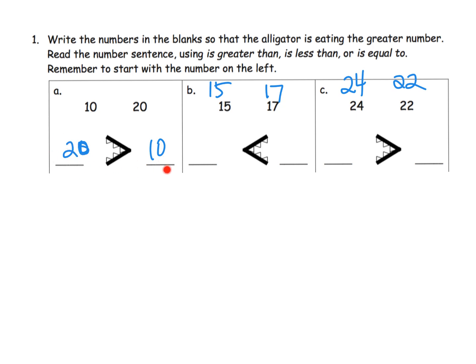Now we have the alligator facing to the left eating that 20 which is the greater number. Now we want to read the sentence from left to right like we're reading a book. Now that we've got it set up correctly, we're looking at 20 and 10 and we know that 20 is greater than 10.